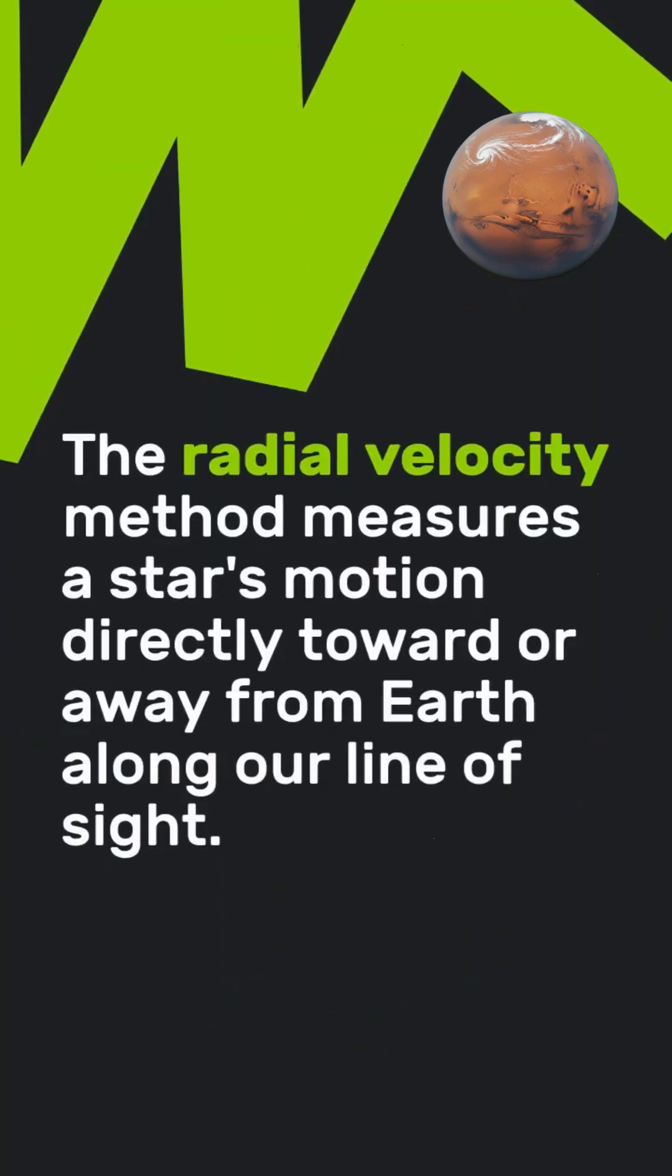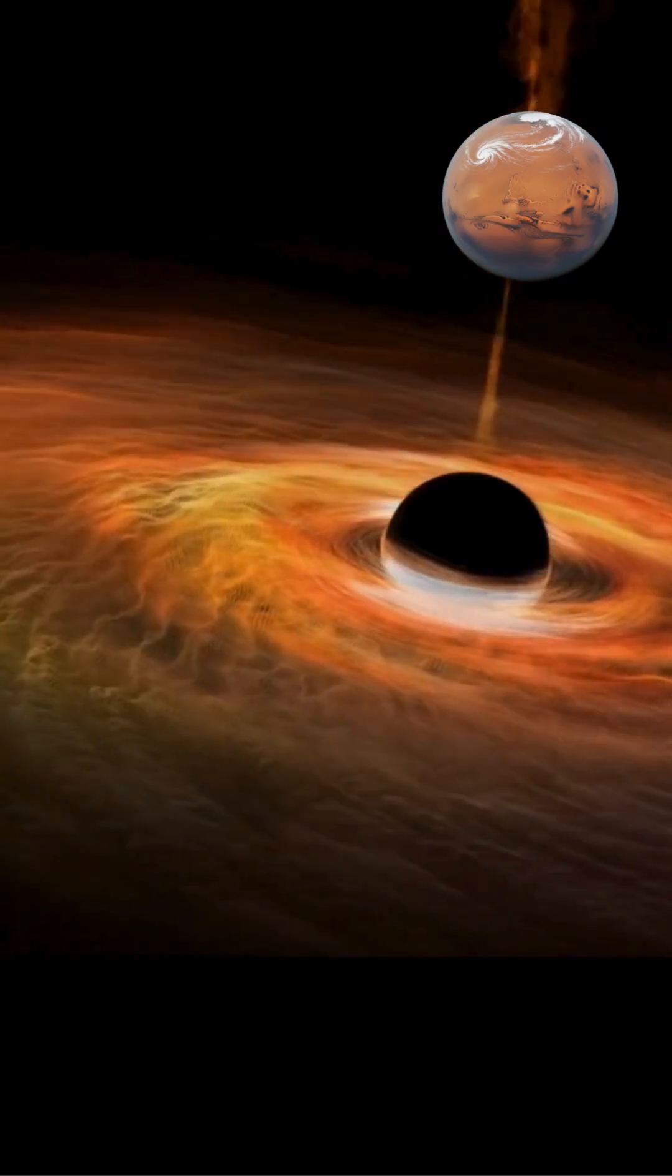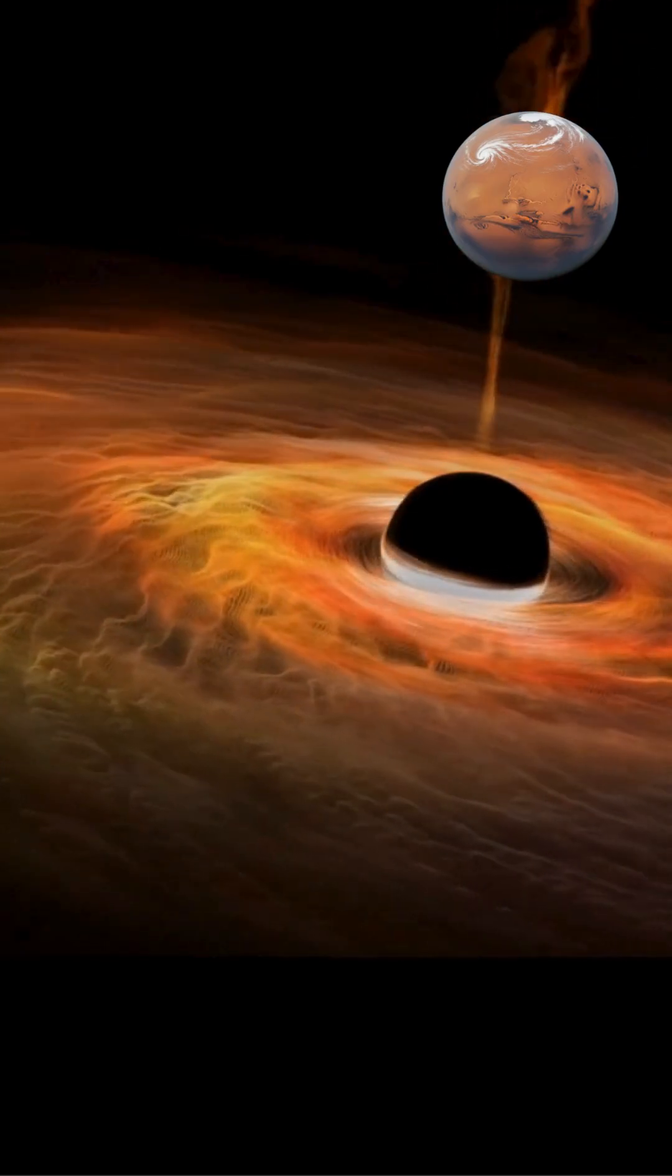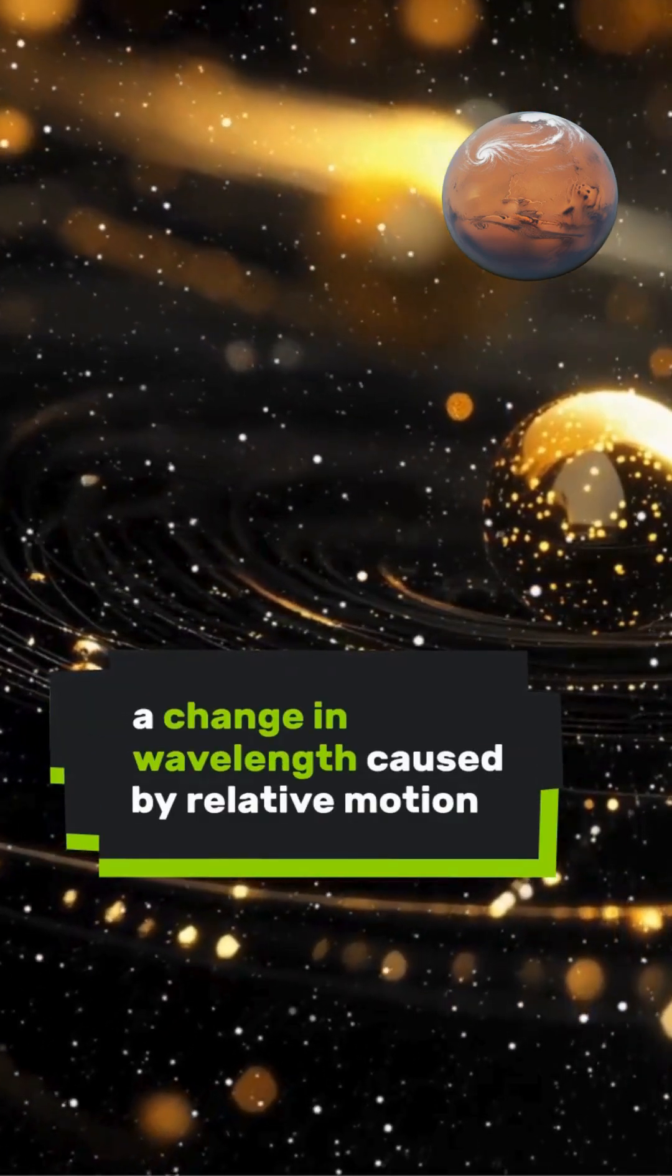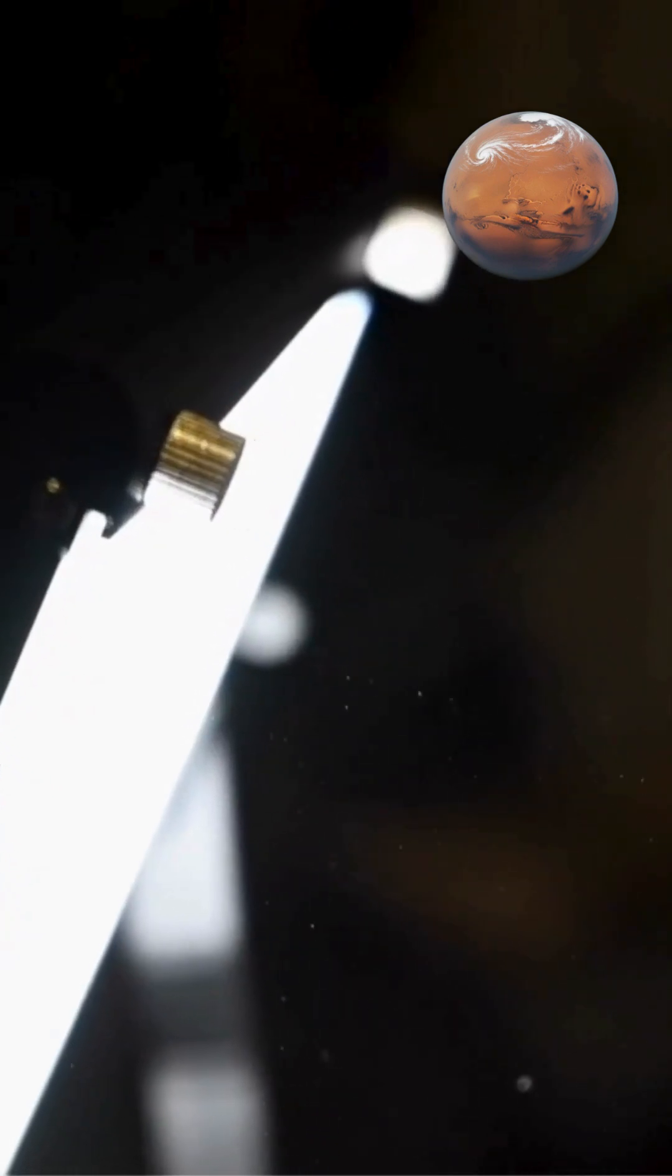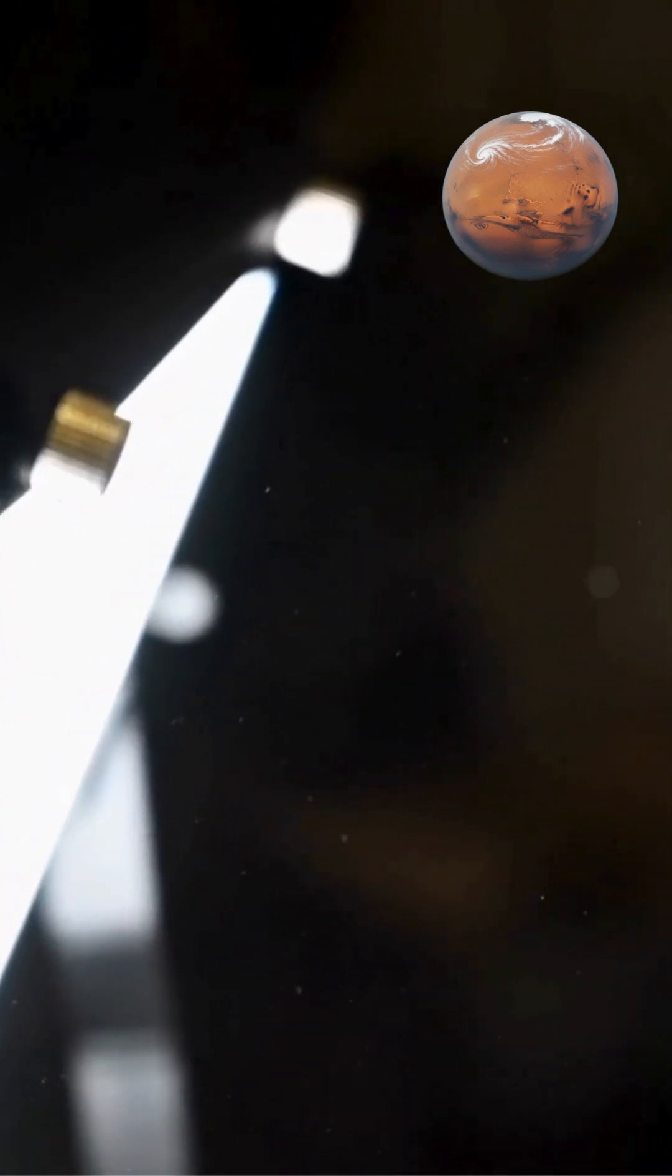The radial velocity method measures a star's motion directly toward or away from Earth along our line of sight. Astronomers use spectroscopy to analyze the star's light and detect the Doppler shift, a change in wavelength caused by relative motion. When a star moves toward Earth, its light waves compress, shifting toward shorter, blue wavelengths.